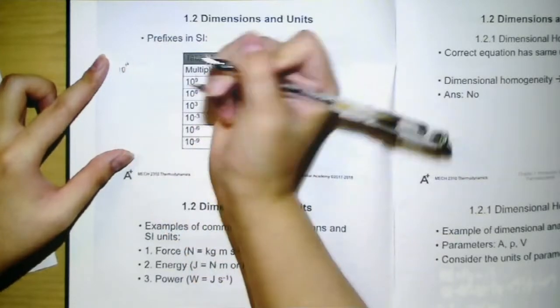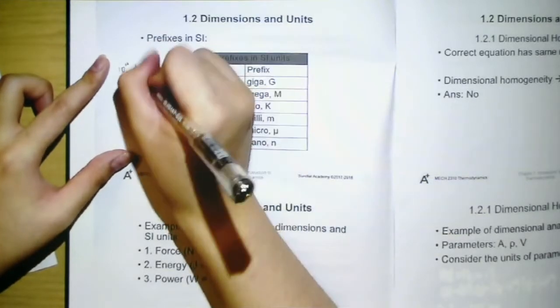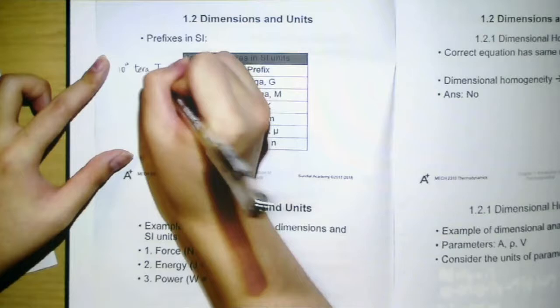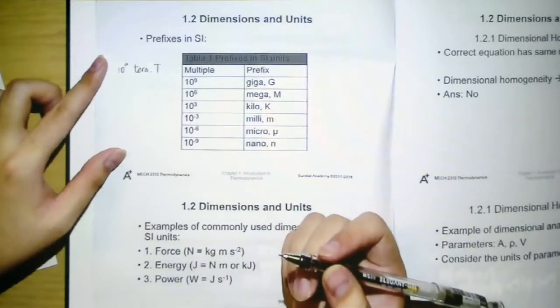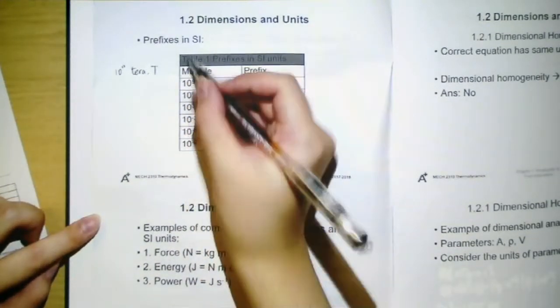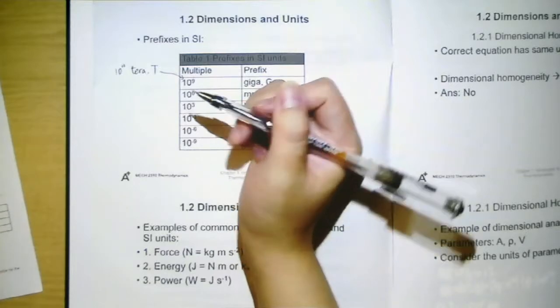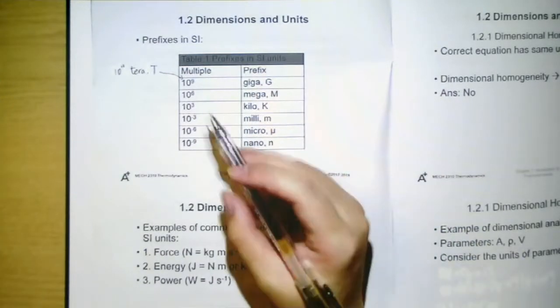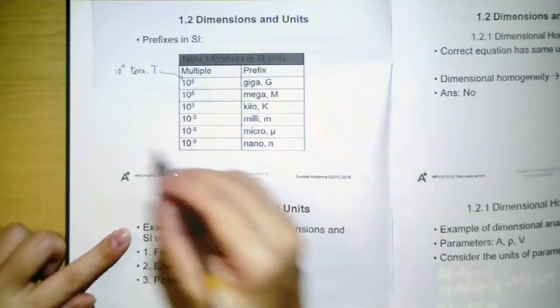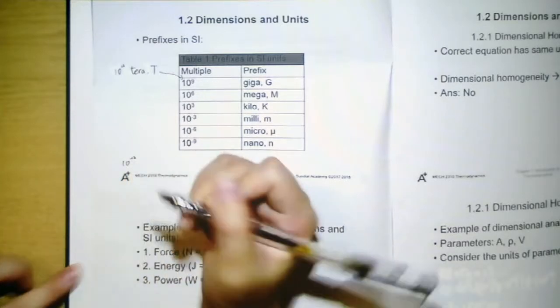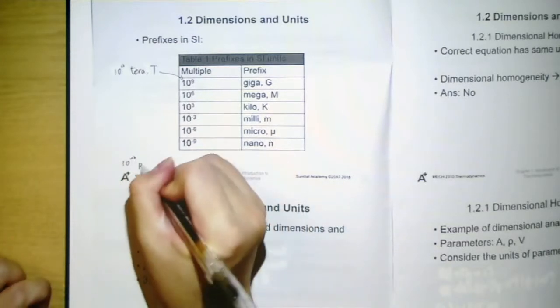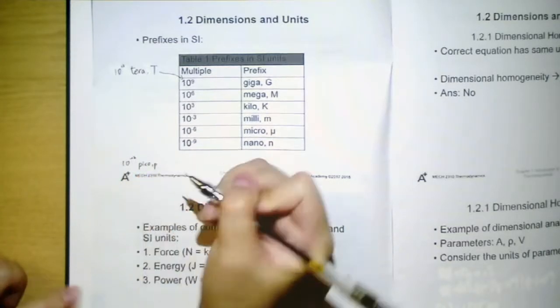In addition to the prefixes listed here, there are also some common prefixes that I haven't listed here. For example, 10 to the power of 12, that will be tera. We will use T to represent the prefix. And another one is 10 to the power of -12, that is pico. We will use p to denote this.